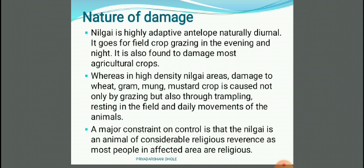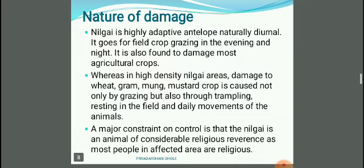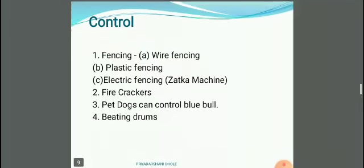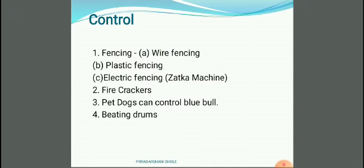In high-density nilgai areas, damage to wheat, gram, mulch, and mustard crops is caused not only by grazing but also through trampling, resting in the field, and daily movements of the animals. A major constraint on control is that the nilgai is an animal of considerable religious reverence, as most people in affected areas are religious.